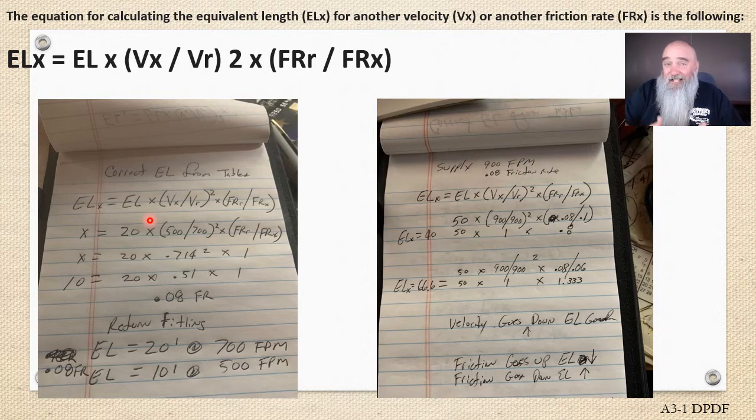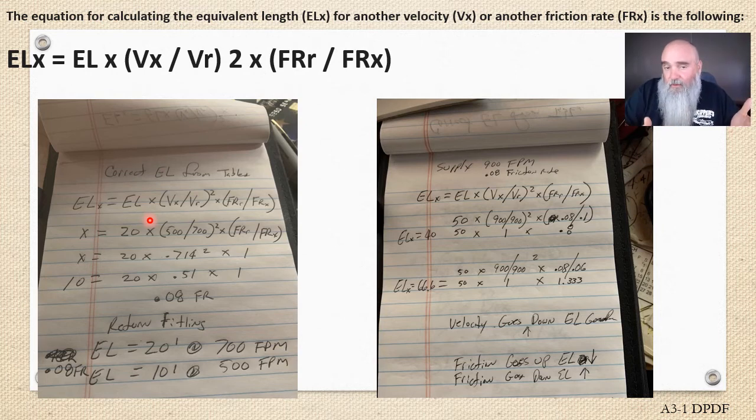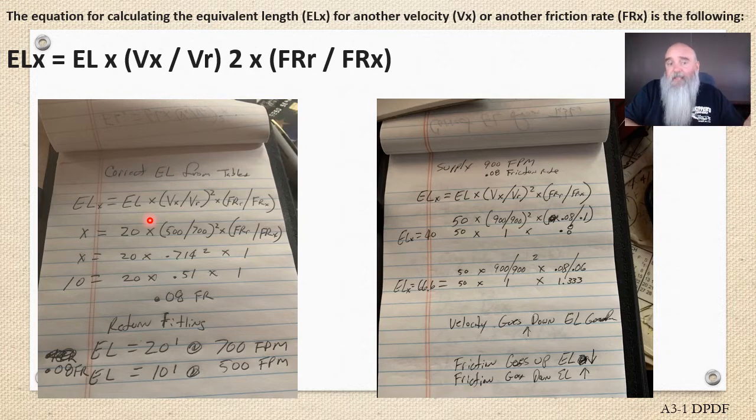Correct airflow, or CFM, is equal to area times velocity. So if our area is small and we want to maintain CFM, our velocity has to go up. It's math, it's the way it works.